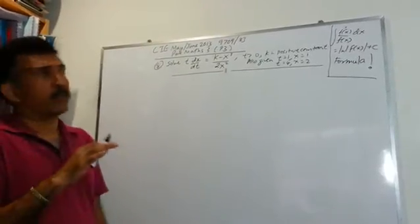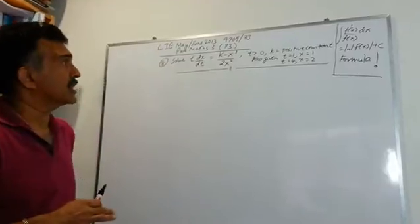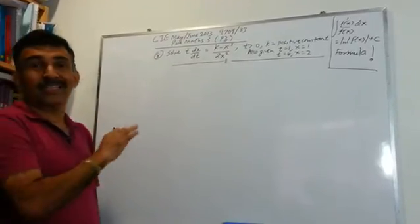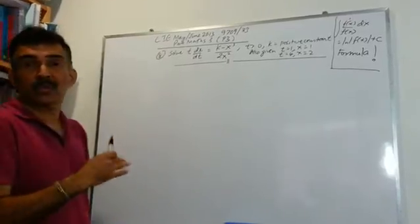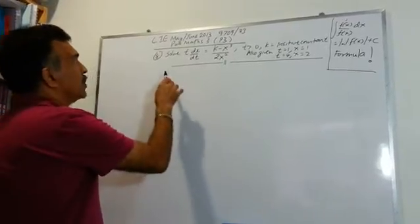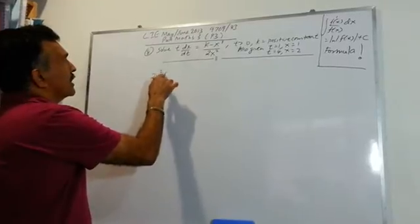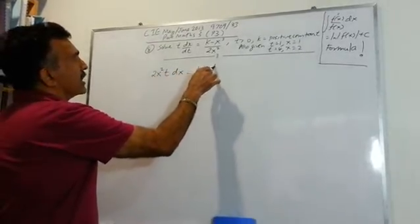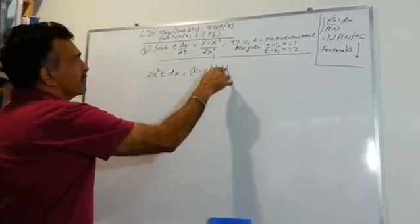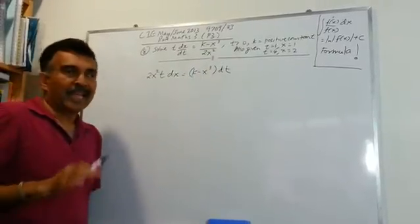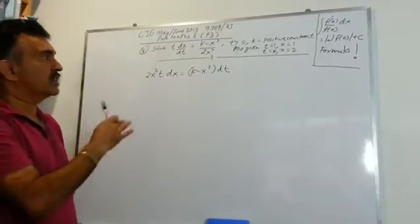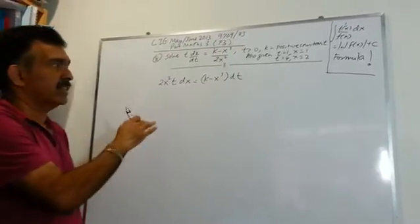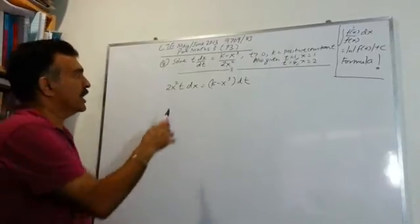If you have a problem trying to separate the variables, I would strongly recommend that you write this equation in a single line first. That means cross multiply first. So we can write it as 2x² · t dx = (k - x³) dt. Then you need to rearrange this equation so that you get all the dx's and x on one side and the dt and t's on the other side.